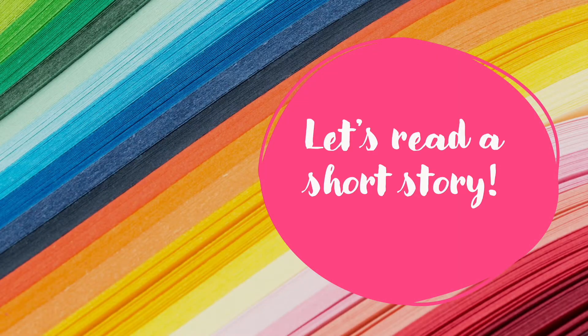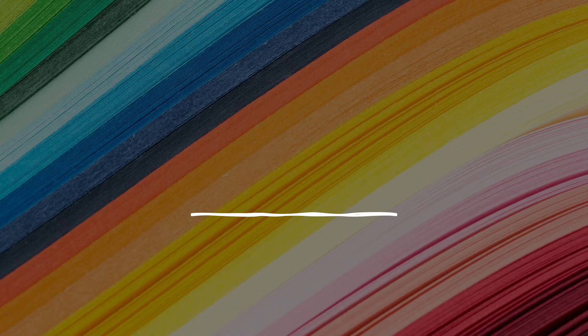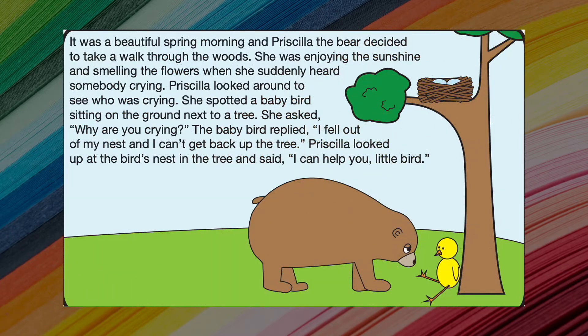Now let's read a short story. Remember to keep in mind the five W's while we read. It was a beautiful spring morning and Priscilla the bear decided to take a walk through the woods. She was enjoying the sunshine and smelling the flowers when suddenly she heard somebody crying. Priscilla looked around to see who was crying. She spotted a baby bird sitting on the ground next to a tree.